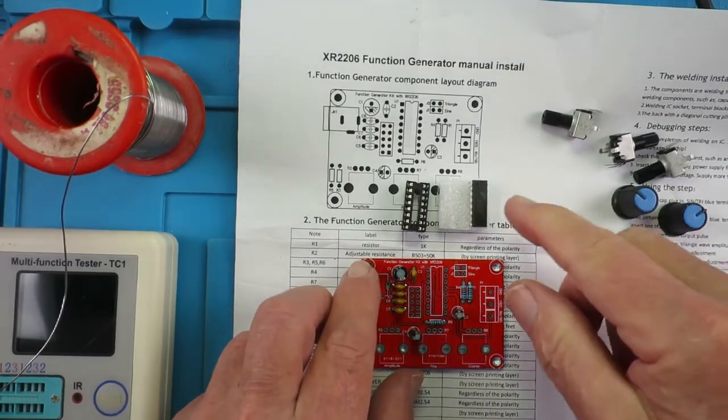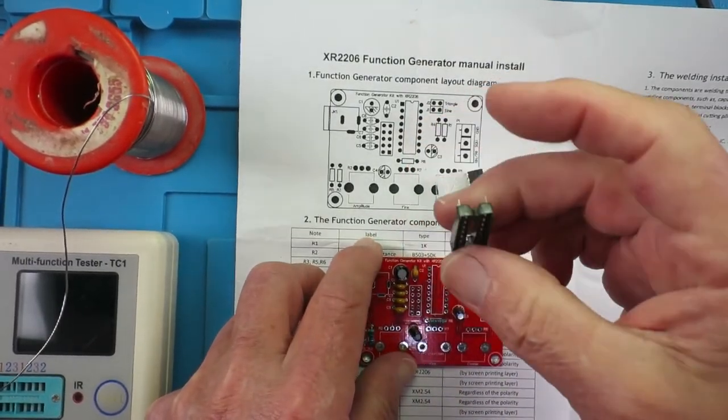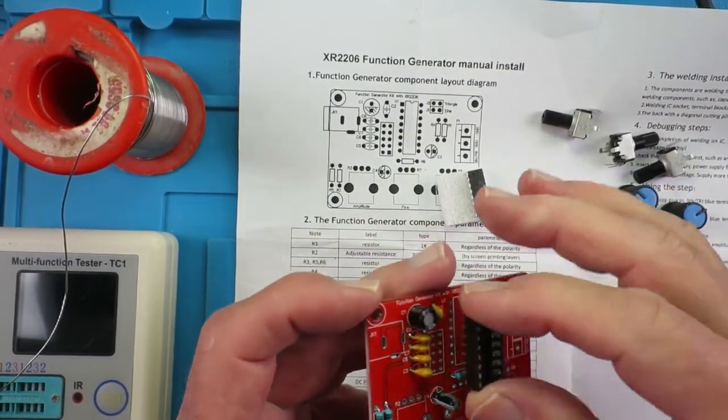With the capacitors in place, the next item is the integrated circuit itself. So you have the little holder there, and the indentation is marked clearly on the board for soldering that.